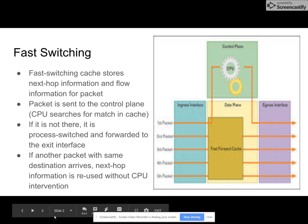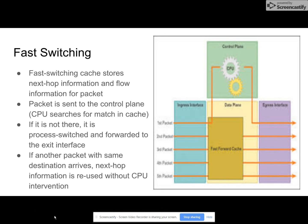Fast switching. The fast switching cache stores next hop information and flow information for the packet. This packet is sent to the control plane where the CPU searches for a match. If there is no match, it's then process switched and forwarded to the exit interface. And if another packet with the same destination arrives, the next hop information is reused without the CPU intervening.